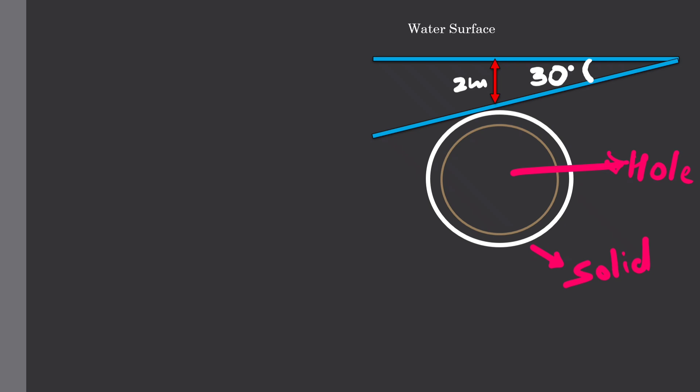The question is very simple: solid plate with a center hole. The solid plate diameter is 4 meters, the center hole is 2.5 meters. This plate is inclined at 30 degrees and is submerged below 2 meters of water surface. That's it.